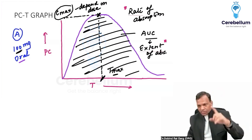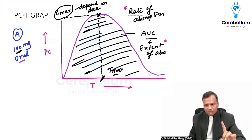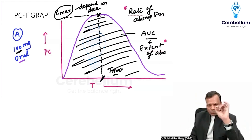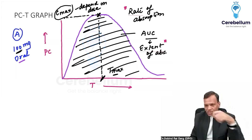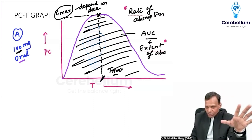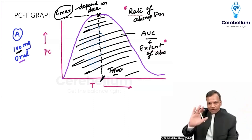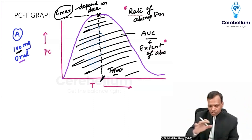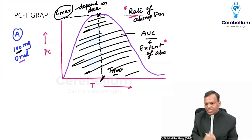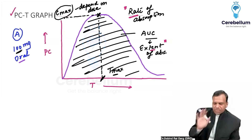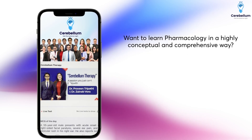So that example is important to understand. In the plasma concentration time graph, Tmax indicates rate of absorption, and AUC indicates extent of absorption. That is the plasma concentration time graph.